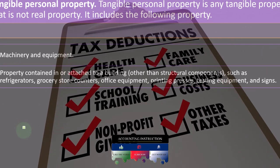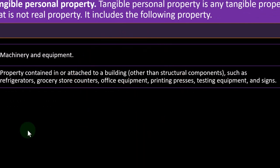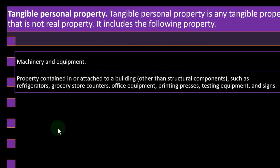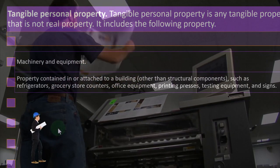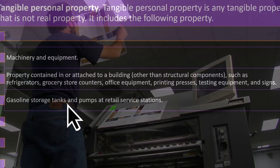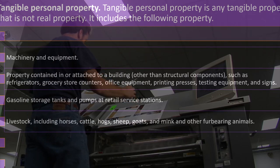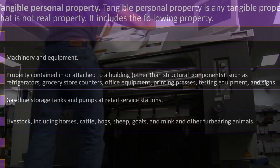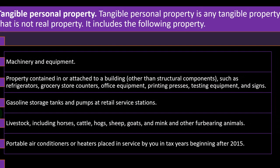So this categorization becomes important when we're trying to maximize depreciation. Property contained in or attached to a building, other than structural components, includes: refrigerators, grocery store containers, office equipment, printing presses, testing equipment and signs, gasoline storage tanks and pumps at retail service stations, livestock including horses, cattle, hogs, sheep, goats, and mink and other furbearing animals.